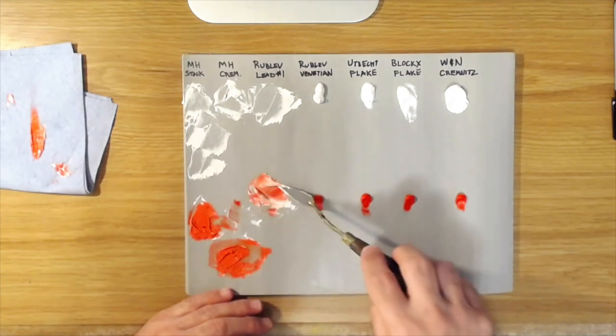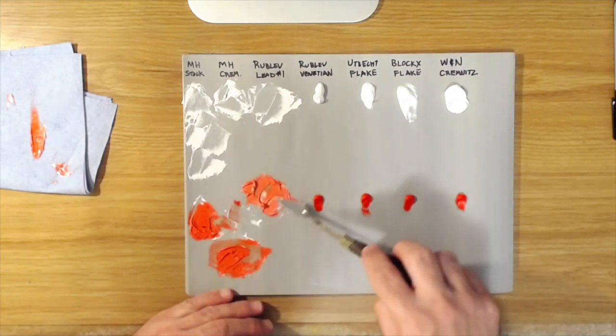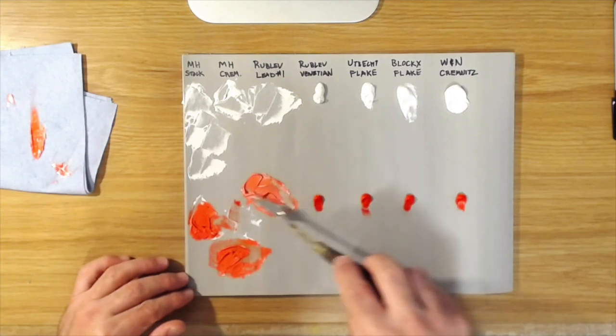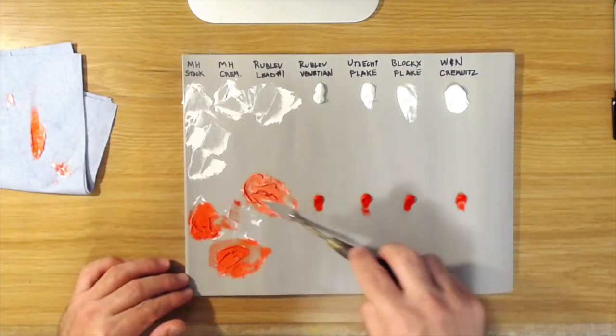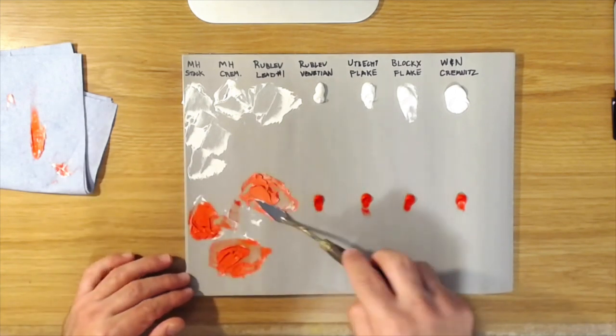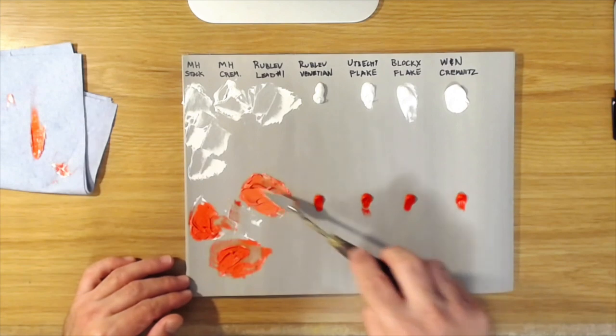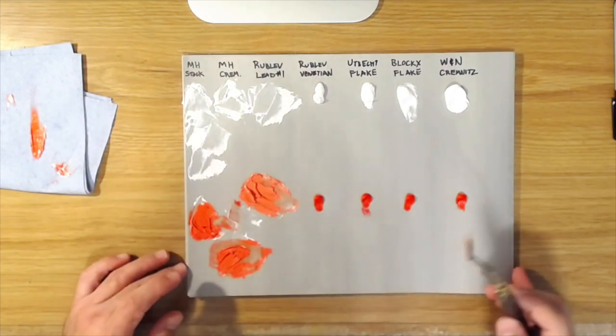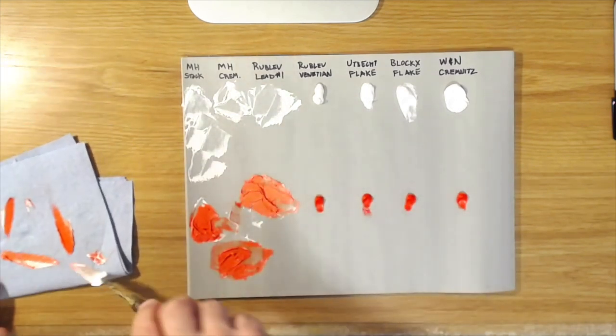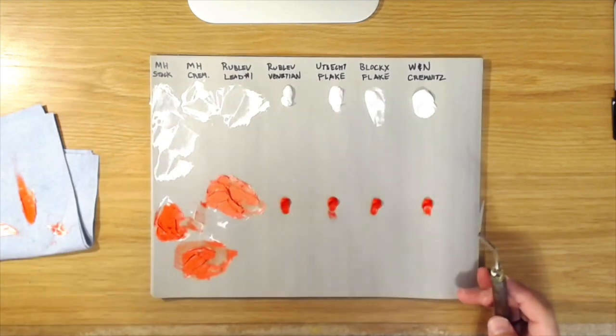Let's see how that tints out with the cadmium. You can see this is slightly more, you know again I'm trying to get these amounts approximately the same but they're not exactly the same. You can see this has a little bit of a higher, this white has a little bit of a higher tinting strength than the Harding white. But it's slight, it's very slight, probably because Rublev tries to pack a lot of pigment into their paints.